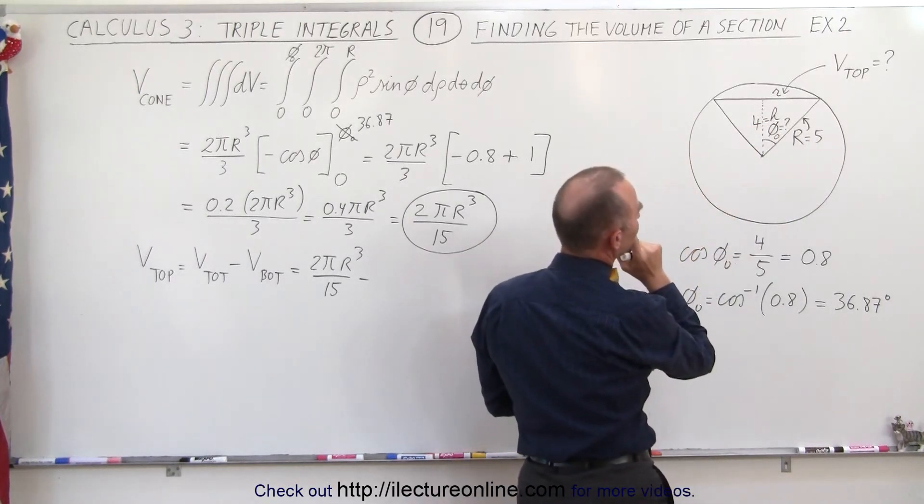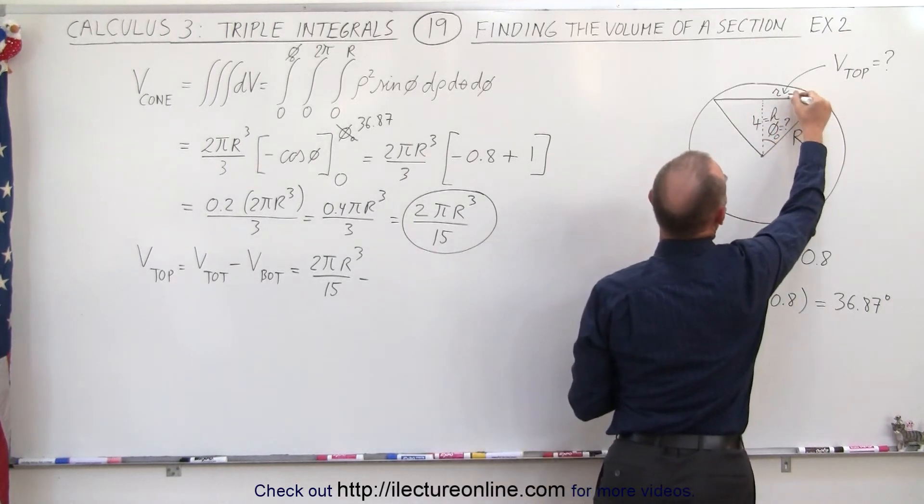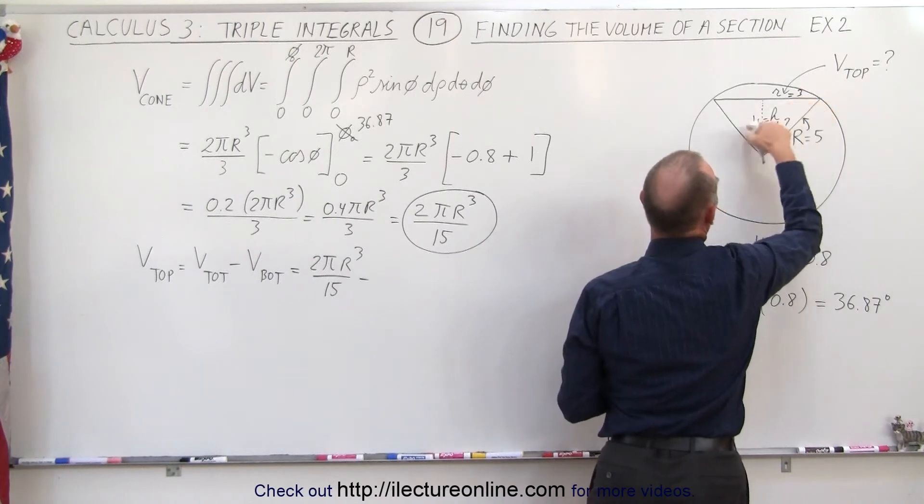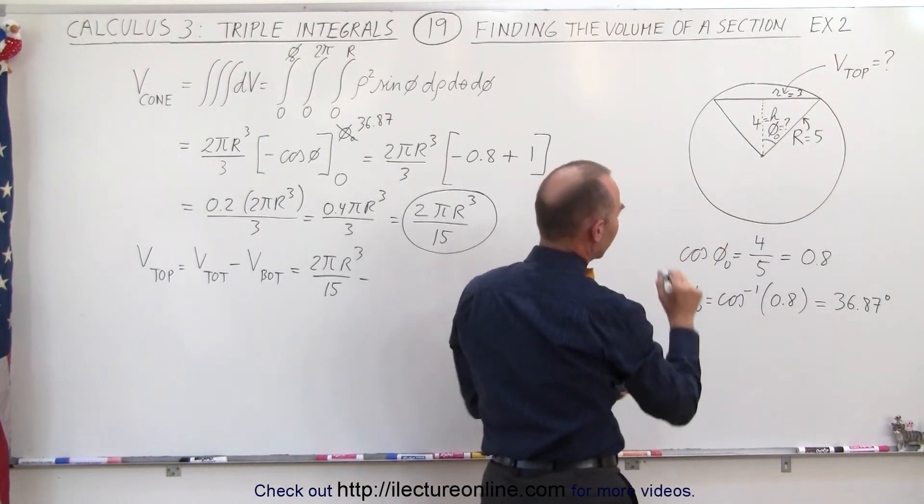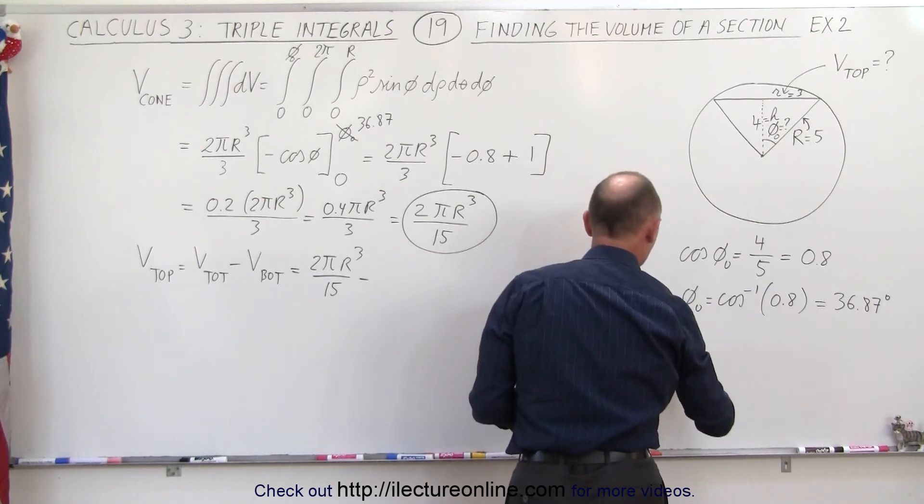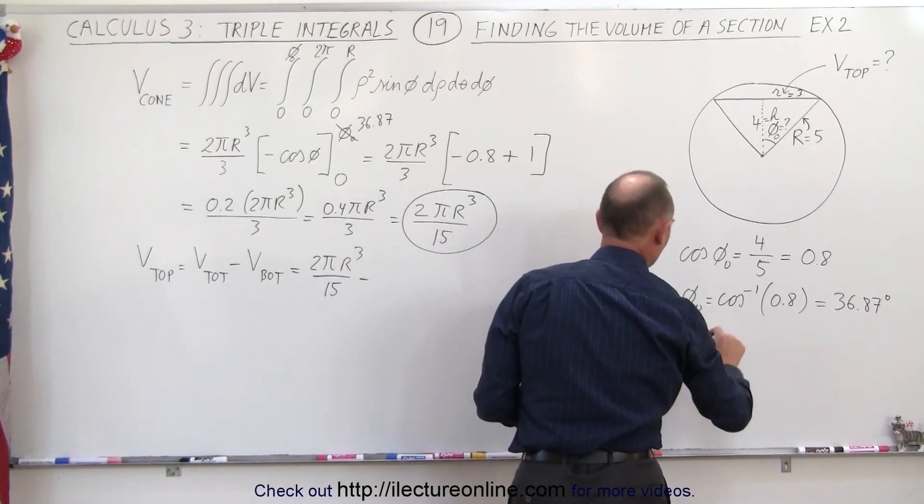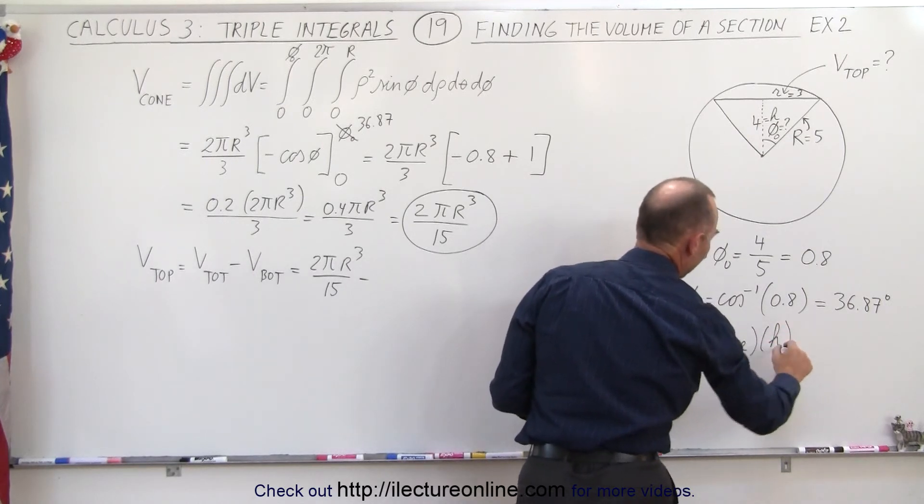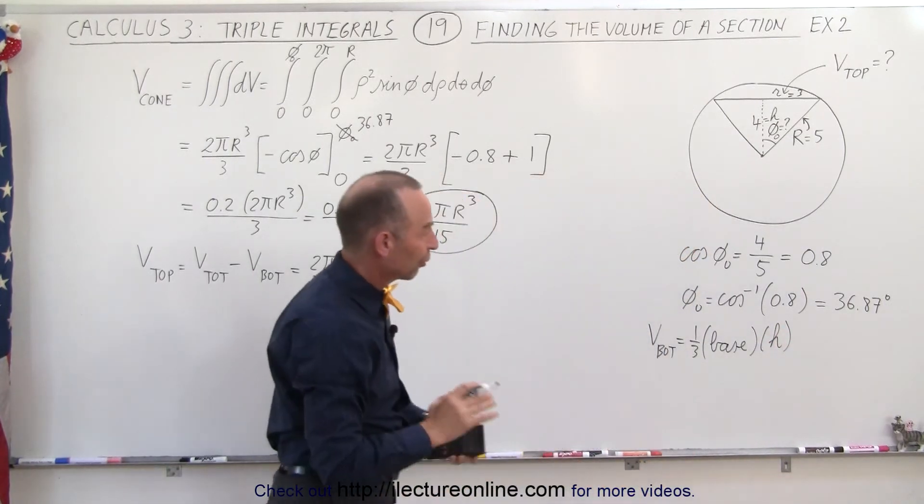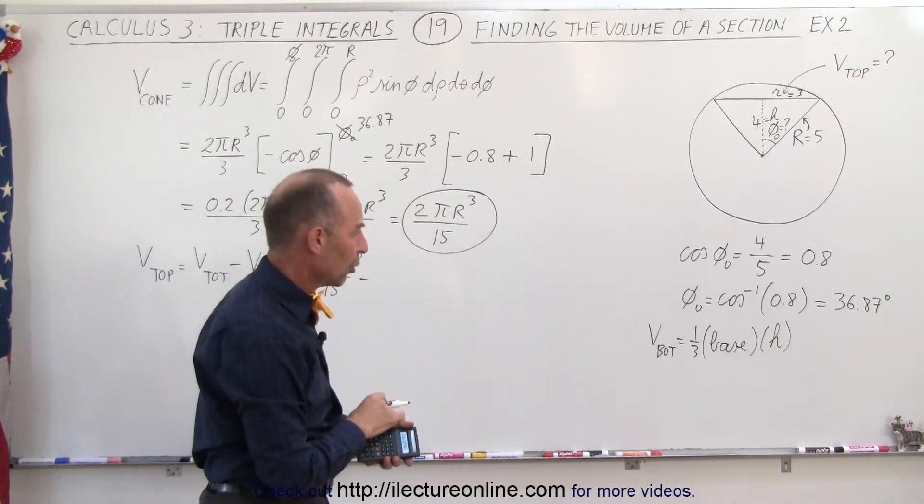We know the dimensions. R is equal to 3, because that's a 3, 4, 5 triangle. And to get that, we have the volume of the bottom is equal to 1/3 the base times the height. And that's of course the equation or the formula for a right circular cone.